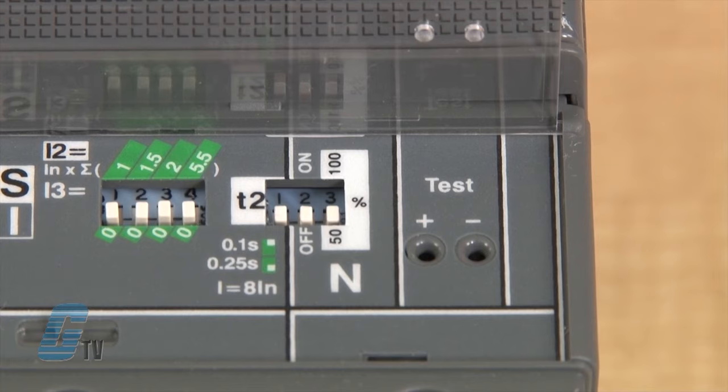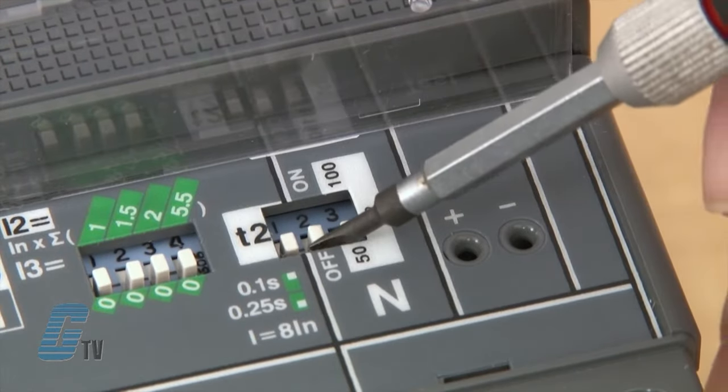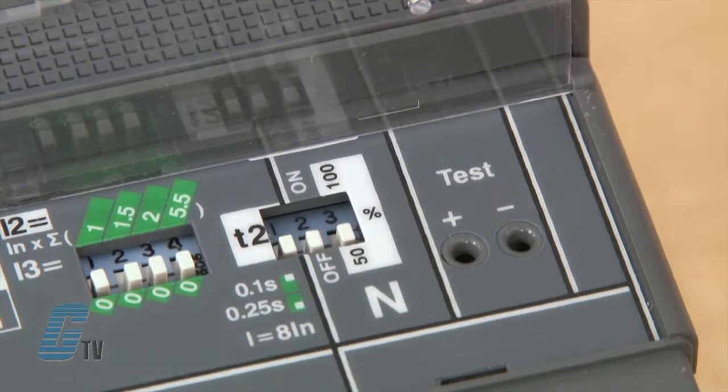My last dip switches on the right are for setting the neutral. This can be turned on or off and can be set to fifty or one hundred percent.